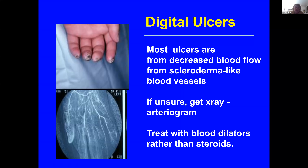That's the typical vasculopathy of scleroderma, or inflammation of the blood vessels. That's why we sometimes have to use an arteriogram — where you put dye into the artery and look at the actual blood vessels to see whether there's inflammation or blockage and decreased blood supply to the fingers. In general, most of the time in scleroderma and in mixed connective tissue disease, with decreased blood supply to the fingers, we treat with blood vessel dilators rather than steroids, which would be used for inflammation of the blood vessels.